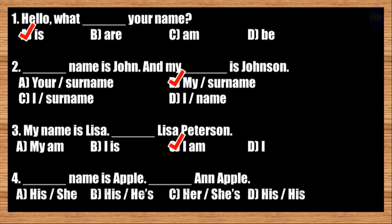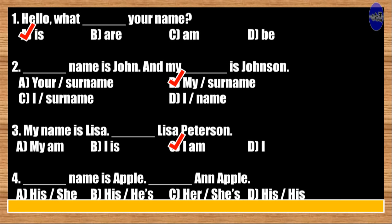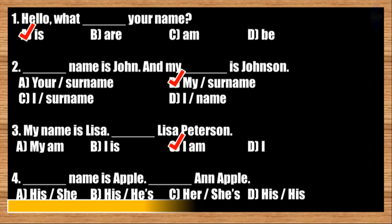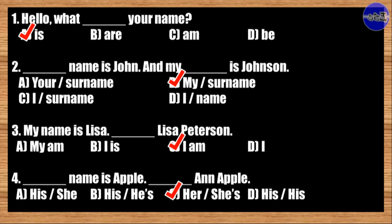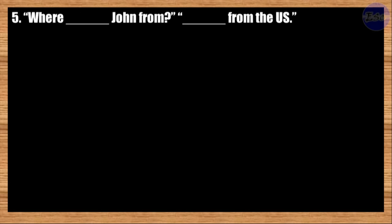Number four: Blank name is Apple, blank Apple. A: his, she; B: his, his; C: her, she is; D: her, sis. The correct answer is option C. Her name is Apple, she is an Apple.